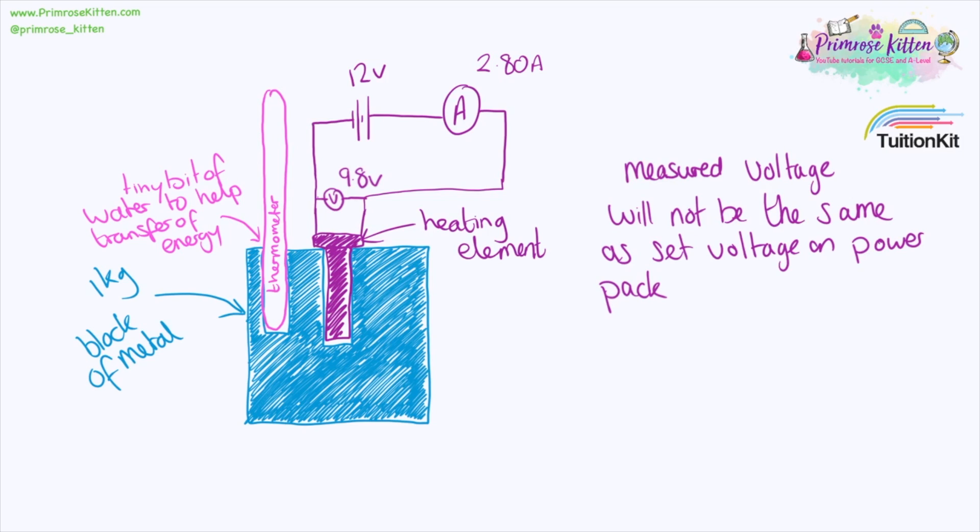So here is my complete circuit. You saw in the video I was using 12 volts for my power input. The actual reading on the multimeter was 9.8 volts and then the ammeter reading was 2.8.